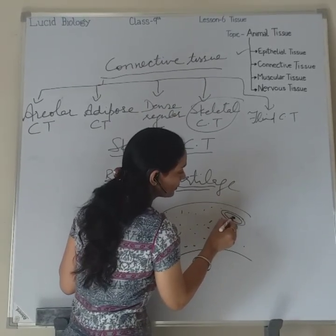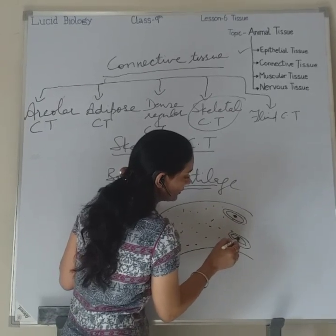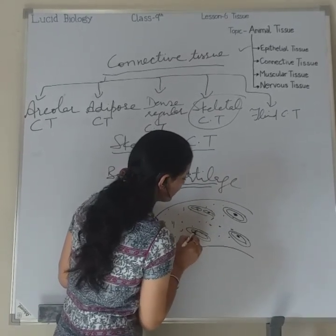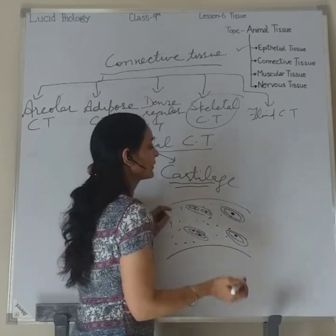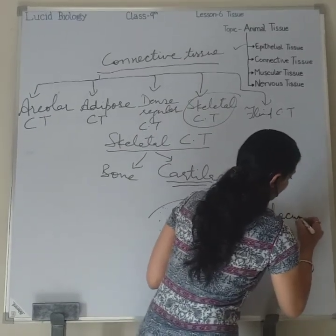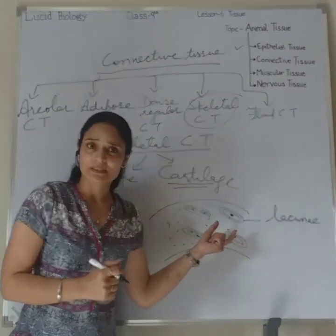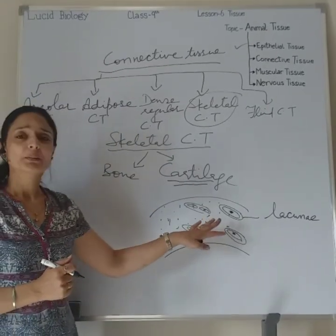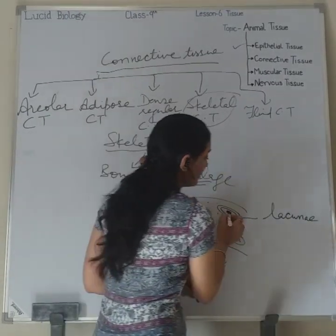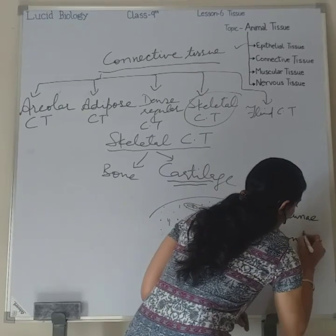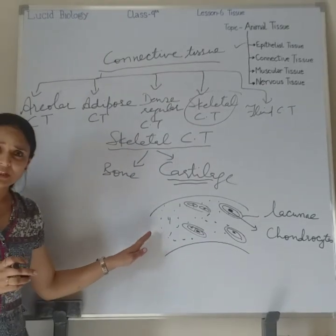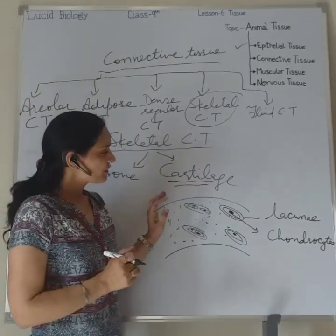The matrix is slightly hardened by salts of calcium. In this matrix there are widely spaced-out fluid-filled spaces called lacunae. Inside the lacunae there are cartilage cells called chondrocytes.